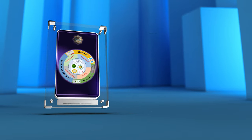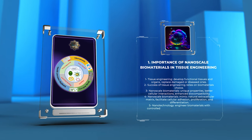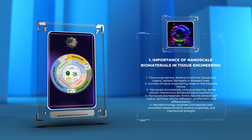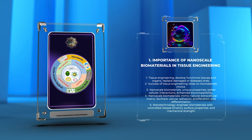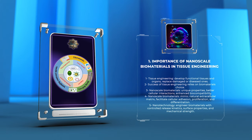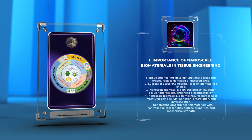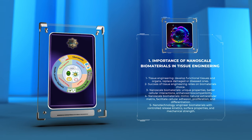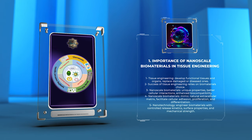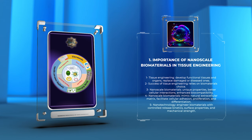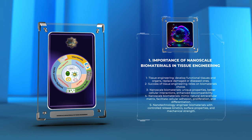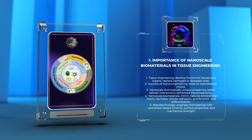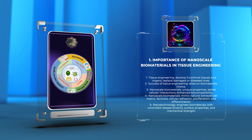Tissue engineering has emerged as a promising field in regenerative medicine, aiming to develop functional tissues and organs to replace damaged or diseased ones. However, the success of tissue engineering relies heavily on the choice of biomaterials used. Nanoscale biomaterials possess unique properties that make them highly suitable for tissue engineering applications. The small size of nanomaterials provides a high surface-to-volume ratio, enabling better cellular interactions and enhanced biocompatibility. Moreover, nanoscale biomaterials can mimic the natural extracellular matrix, facilitating cellular adhesion, proliferation, and differentiation. Through nanotechnology, we can engineer biomaterials with controlled release kinetics, surface properties, and mechanical strength, thus enabling precise manipulation of cellular behavior within artificial tissues.